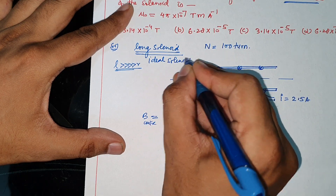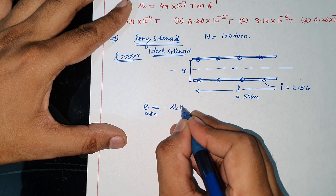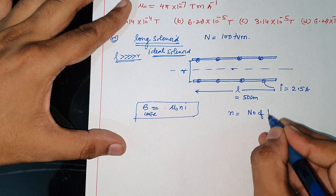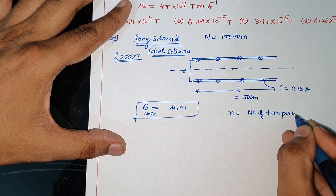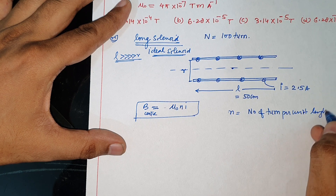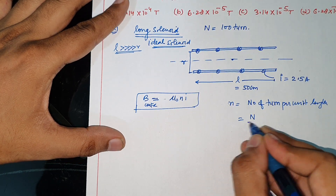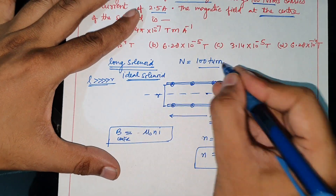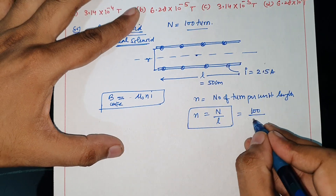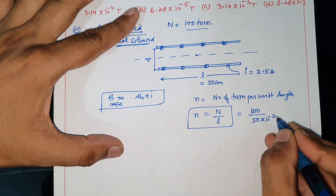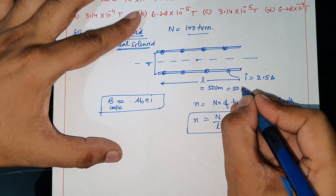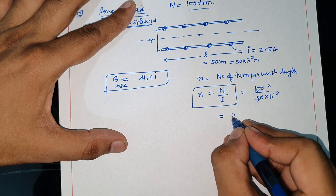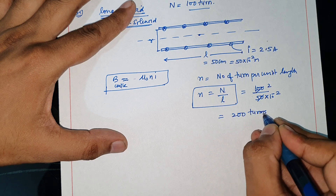Ideal solenoid mein B hota hai mu naught into small n into I. Yahan jo small n hai, yeh number of turns per unit length hota hai — that means total number of turns divided by length. Yeh total number of turns hai jo ki yahan diye hain 100 turns, aur length di hai 50 cm. Meter mein convert karne ke liye 50 × 10⁻² — toh yeh cut gaya, 2 upar gaya, toh 200 turns per meter aa gaya.